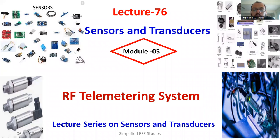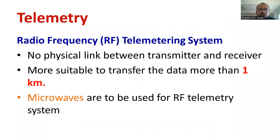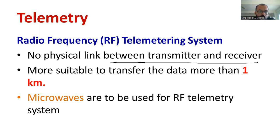Dear all, I would like to welcome you to the lecture series of sensors and transducers. In this lecture video, I am going to discuss the radio frequency telemetry system, also known as RF telemetry or RF telemetry system. The specialty of the RF telemetry system is that there is no necessity of a physical link between the sending and receiving end. It is also suitable to transfer data more than one kilometer. These are the important features of this type of telemetry system.